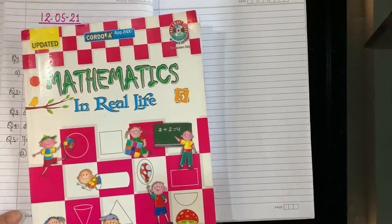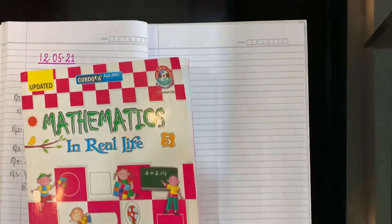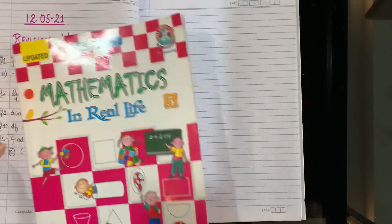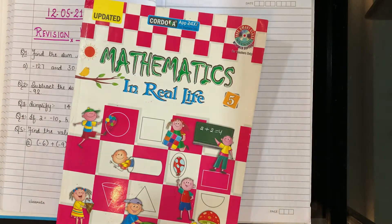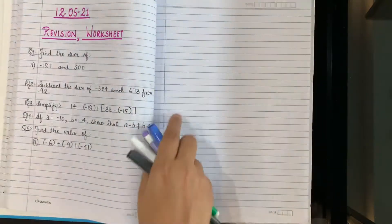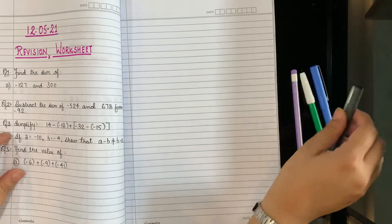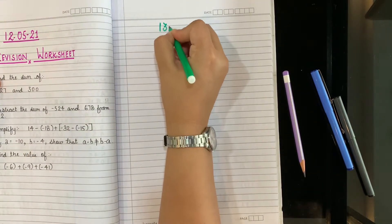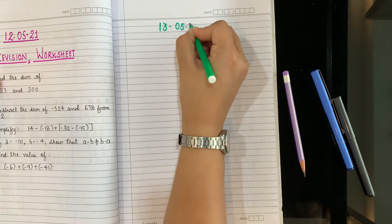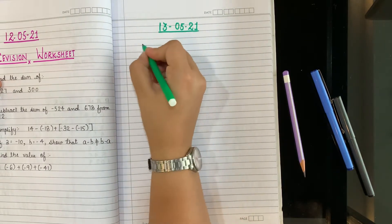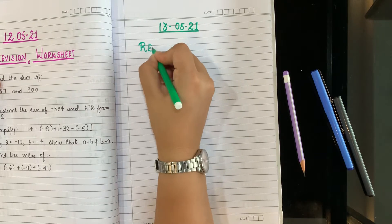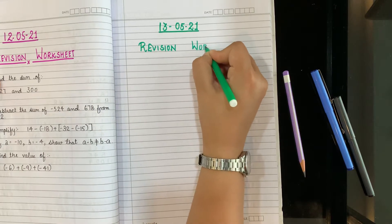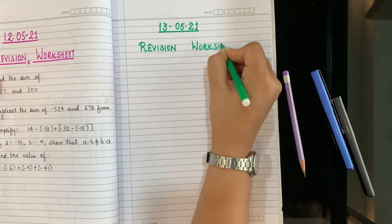Good morning class 5. How are you all? Take out your maths notebook everyone. Write down today's date on the top, 13 May. Write down Revision Worksheet. Write on the top: Revision Worksheet.